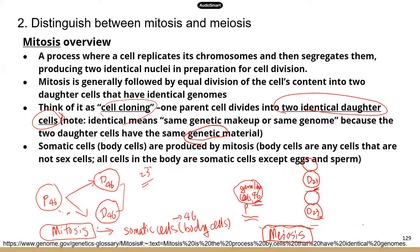The take-home message is to understand why we have two different types of cell division — because they are used to make different cells. Now let's look at mitosis in more detail. In mitosis, the cell divides, so everything in the cell is split. How do you maintain the same number of chromosomes if you're dividing everything in half?